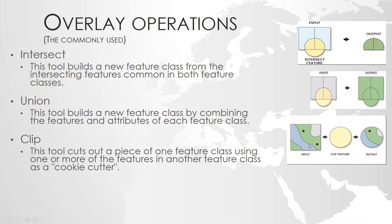All attributes from the clipping layer are left out, and only those attributes that originate in the input layer are included in the output layer. So the difference between clip and intersect is that the intersect has all attribute combinations and generates all unique spatial combinations, while the clip only has the attributes from the input layer.